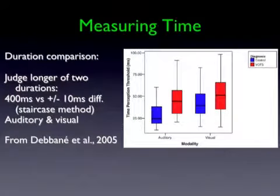Stefan Elias's lab has shown exactly the same phenomenon with time. You ask children to hear a sound and then another sound and judge which duration was longer, varied by as little as 10 milliseconds. The kids with the deletion — shown in red — had much bigger thresholds whether the stimuli were presented auditorily or visually. They needed a much bigger difference before they could say one duration was longer than the other.